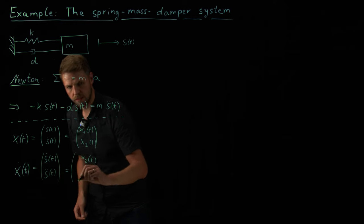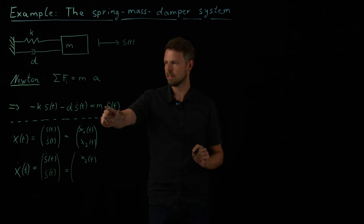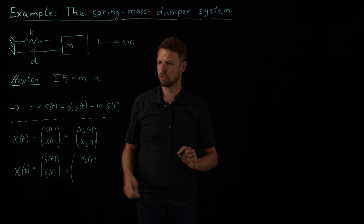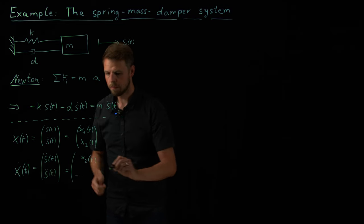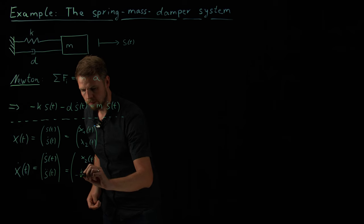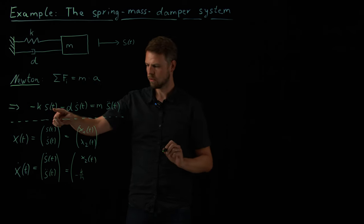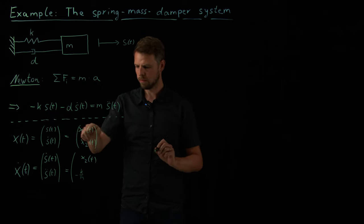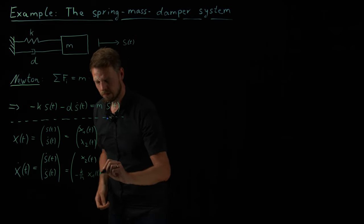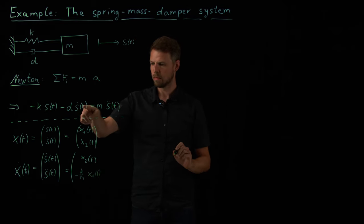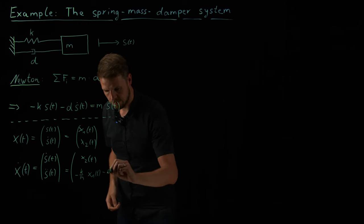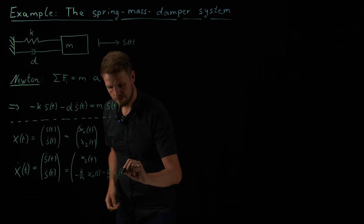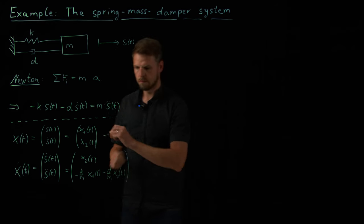And the derivative of the second component, so x2 dot, is s double dot. Right now we have the vector, and what you can see here is, this is the rule that we derived from Newton's law. So I can simply say this is minus, I divide by m, k over m, s of t, which is the x1 here, minus d over m, s dot of t, which is our x2.